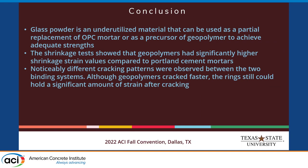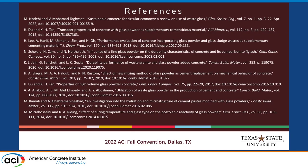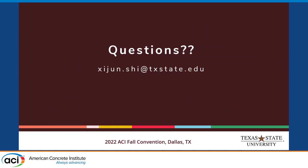In my conclusion: glass powder is an underutilized material that can be used as a partial replacement of OPC or as a precursor for geopolymer, and we can achieve very good strengths. The shrinkage tests show that geopolymers have significantly higher shrinkage strain values compared to Portland cement-based mortars. We observed very different cracking patterns between the two binder systems. Although geopolymers cracked faster — within one day — the ring could still hold a significant amount of strain after cracking. Here are some references cited for this presentation. If you have any questions, feel free to ask. Thank you so much.